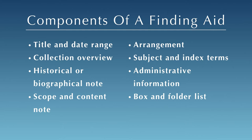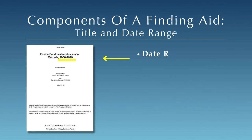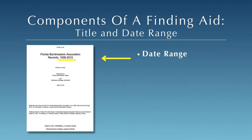Next, let's look at each of these components in a bit more detail. The title and date range of the collection are provided at the beginning of the finding aid. Pay special attention to the specified date range. If you're looking for items from a particular century or era, you can tell whether the collection falls within this period by looking closely at the date range.